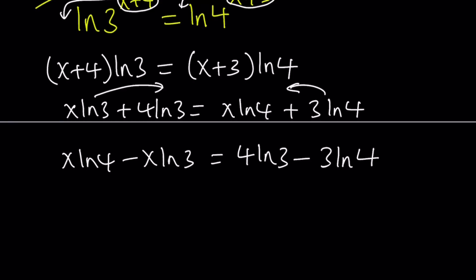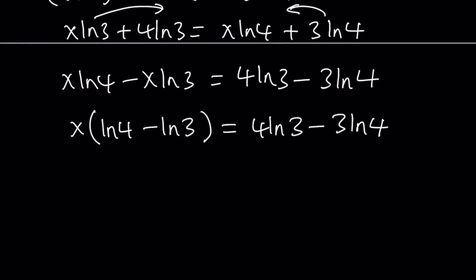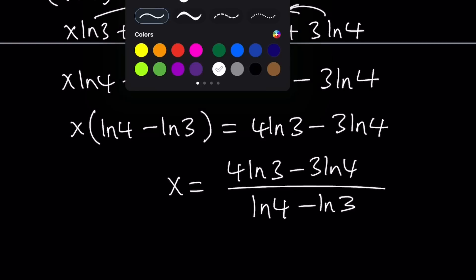Now we can go ahead and factor out x and then from here we should be able to get the answer. All we have to do is divide both sides by ln 4 minus ln 3, which is obviously not zero in this case. So if you divide both sides by that, you get the answer. That will be the solution and the only solution because this is a linear equation and it only has one solution.